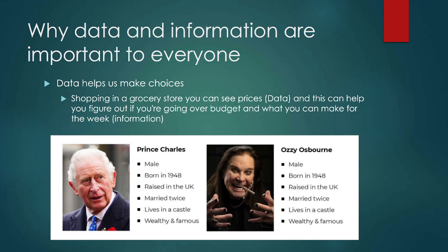For example, if I told you there was a male born in 1948, raised in the UK, married twice, lives in a castle, and was wealthy and famous — that is a whole bunch of data, but it doesn't necessarily tell us who I'm talking about. You can see by this example I could reasonably be talking about King Charles or Ozzy Osbourne. These are not the same person, and you'd probably want to make sure you don't accidentally mistake one for the other, especially if you're going to be going to the UK. So it's important to think about the context that we have all of this information in.